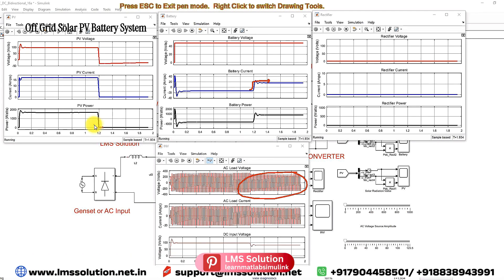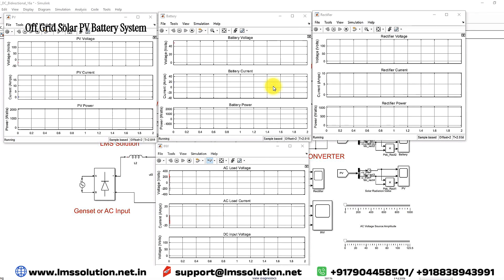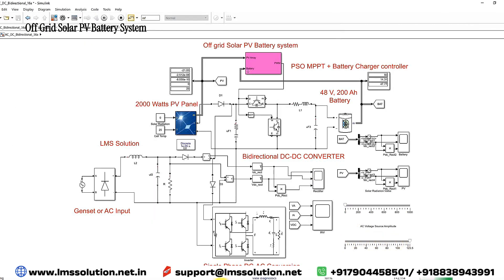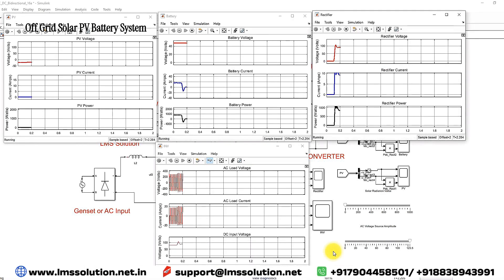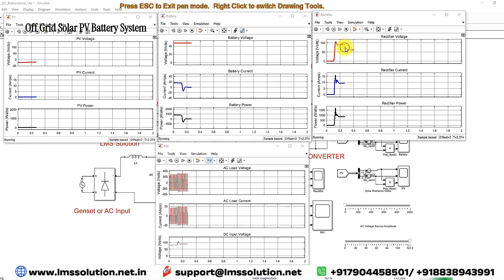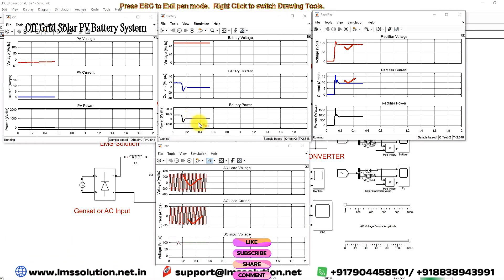Now we consider the SOC of the battery is very low, so I am going to connect the generator set. Because of the inclusion of the generator set, the rectifier voltage and current are increased. The generator set is now supplying power to the AC load, and the power generated from the rectifier/filter directly drives the AC load, so it is maintained constant.